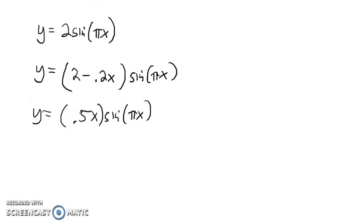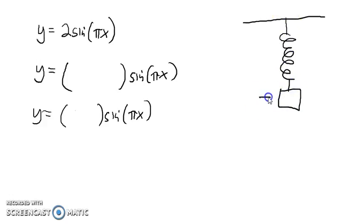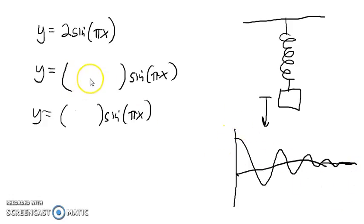A much more common type of equation that you see in the real world is an exponentially changing amplitude. A great example of this would be if you imagine an object hanging from a spring and you pull it down and release it. The spring is going to bounce up and down, but as friction and air resistance applies, the amplitude of that oscillation is going to get smaller and smaller. It's never going to hit 0 or go negative, but it's going to decrease exponentially.